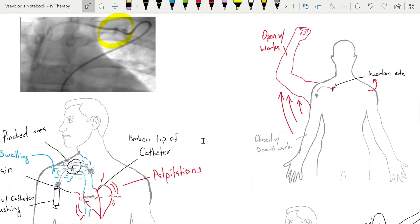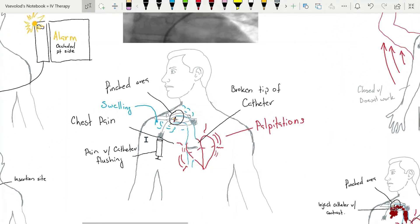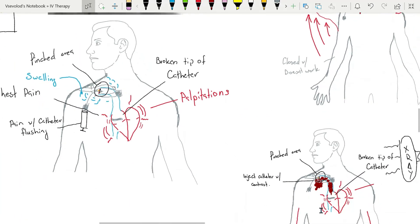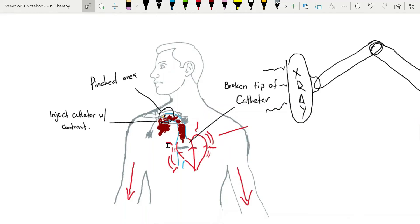In patients in whom catheter was completely cut off internally, some patients may experience chest pain, palpitations, swelling in the area of central vascular access device, or pain with catheter flushing. Catheter injection with contrast is recommended to identify any catheter leak or malposition.